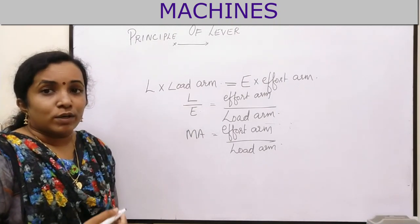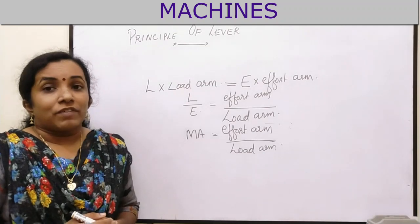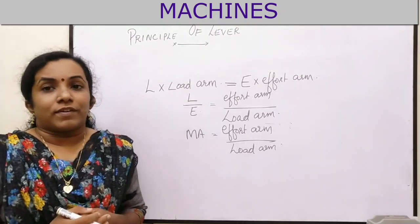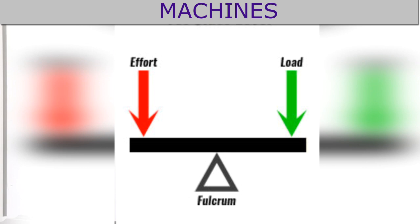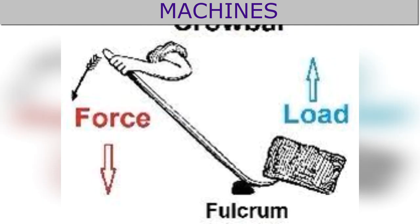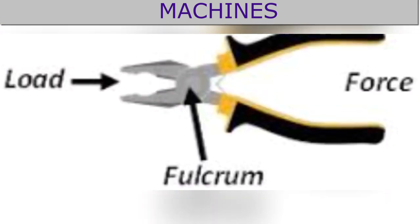On the basis of the position of load, effort and fulcrum, we have three types of levers: class 1, class 2, and class 3. In a class 1 lever, the fulcrum is in between the effort and the load — not necessarily at the midpoint, but somewhere in between, with load and effort on either side of the fulcrum. Examples include a pair of scissors, crowbar, hand handle of a water pump, claw hammer, and pair of pliers.